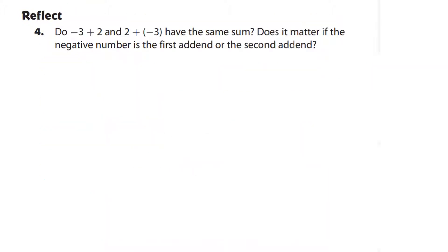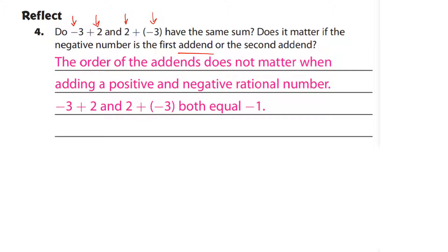Do negative three plus two and two plus negative three have the same sum? It doesn't matter whether the negative number is the first or second addend — both equal negative one. An addend is each number being added. When the order doesn't matter, that's called the commutative property — it says the order in which you add does not matter.